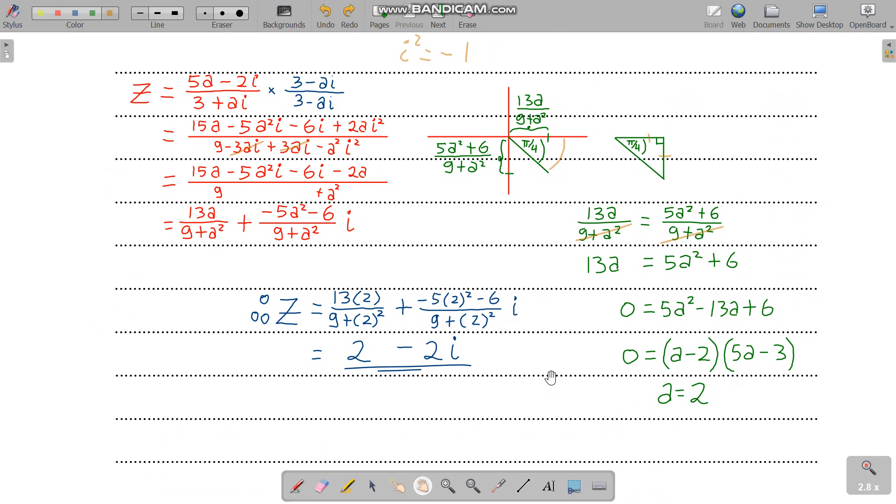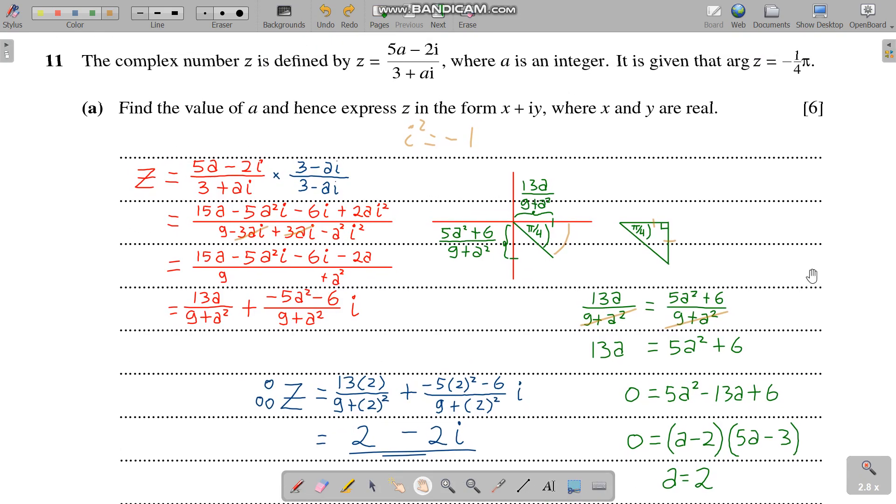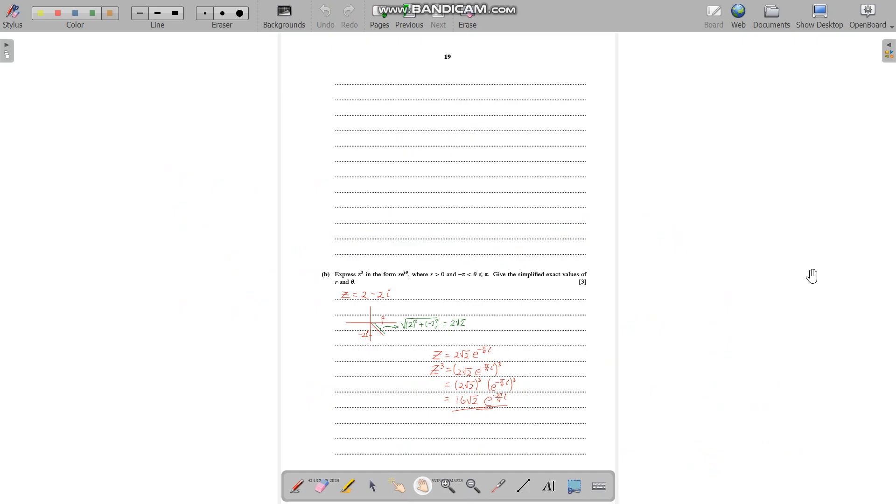After we find a, replace all the a with 2. Use a calculator: this is 26 over 13 which is 2, and this is minus 26 over 13 which is minus 2. So the final answer, z is 2 minus 2i. Right, now the second part.